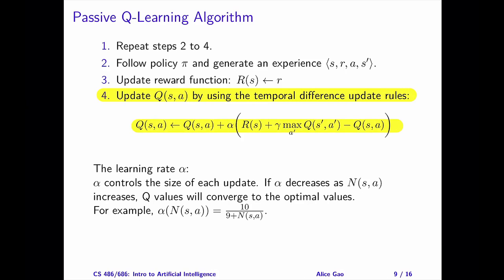I have made a special note about alpha. Alpha is called the learning rate. It is similar to the learning rate in the gradient descent algorithm. The magnitude of alpha controls the size of each update. In the algorithm, I wrote alpha to be a fixed value. In practice, it's better to change alpha as we receive new experiences.